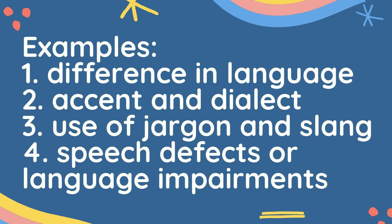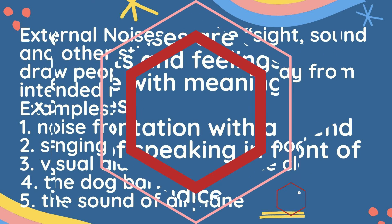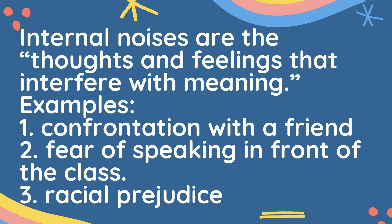Next, external noises are the side sounds and other stimuli that draw people's attention away from the intended meaning. Examples include noise from vehicles, singing in the neighborhood, visual aids in front of the classroom, a dog barking, and the sound of an airplane. This is similar to physical barriers.